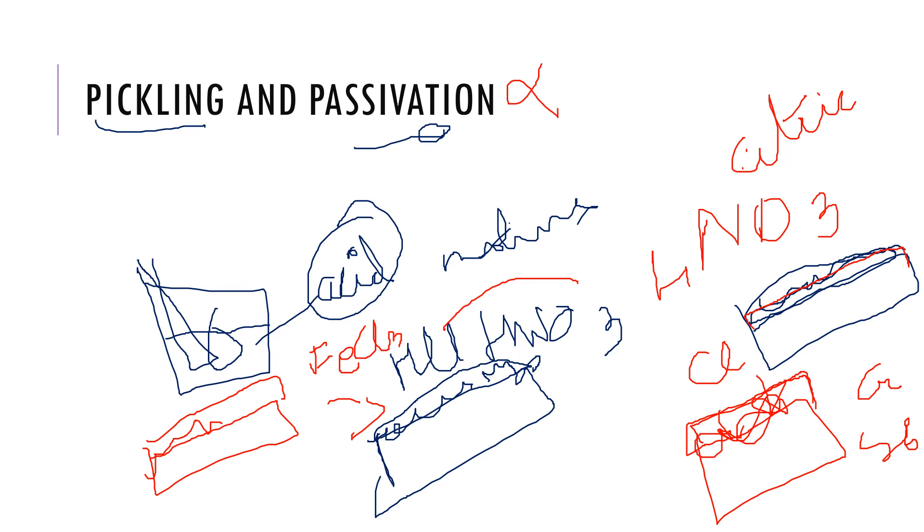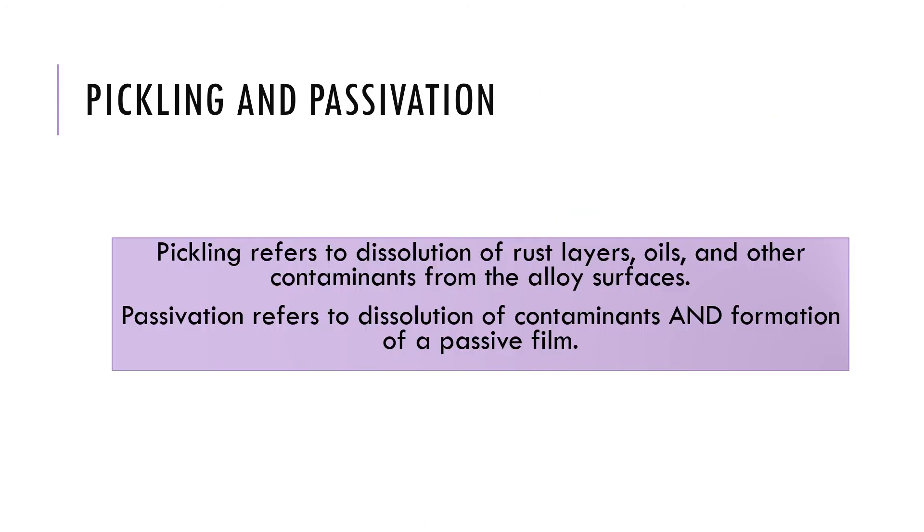Thus, pickling refers to dissolution of rust layers from the alloy surfaces, while passivation refers to dissolution of contaminants as well as formation of a passive film.